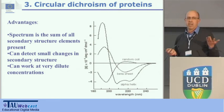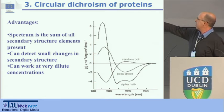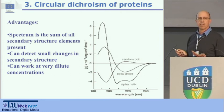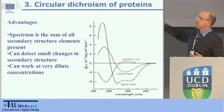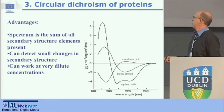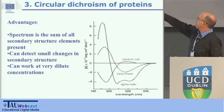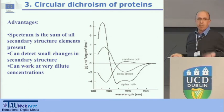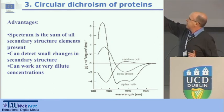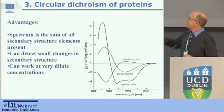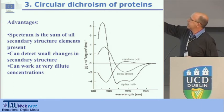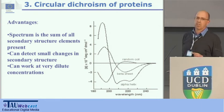Circular dichroism is a spectroscopic technique operating in the region of 180 to 440 nanometers. The spectrum is sensitive to the secondary structure of your protein. If you have an alpha-helical protein, you get this characteristic shape with a double minimum and maximum. For a beta-sheet protein, you get a completely different spectrum. The advantage of the technique is that what you record is the sum of all secondary structure elements present, and another big advantage is that you can work with very low sample concentrations.